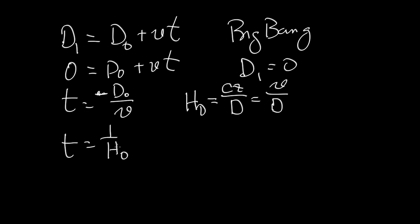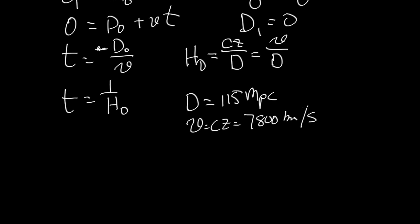Now let's use my galaxy now to measure the age of the universe. So the distance to the galaxy is 115 megaparsecs, and the V, or Cz, is equal to 7,800 kilometers per second. So if we do a little calculation, we get that T is equal to D, 115 megaparsecs, divided by V, 7,800 kilometers per second.